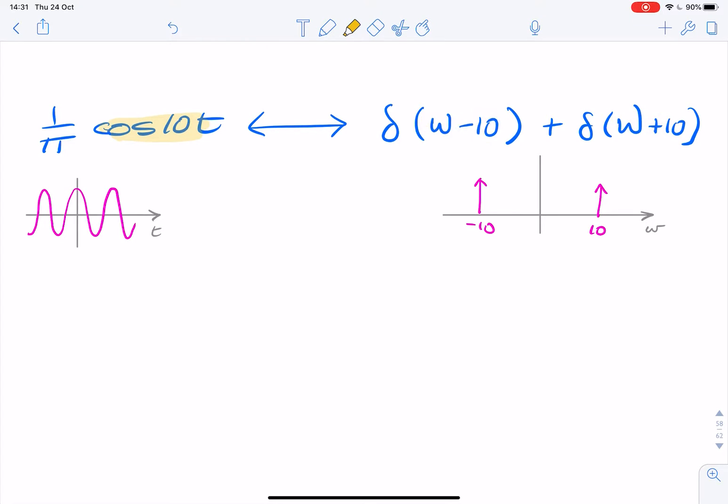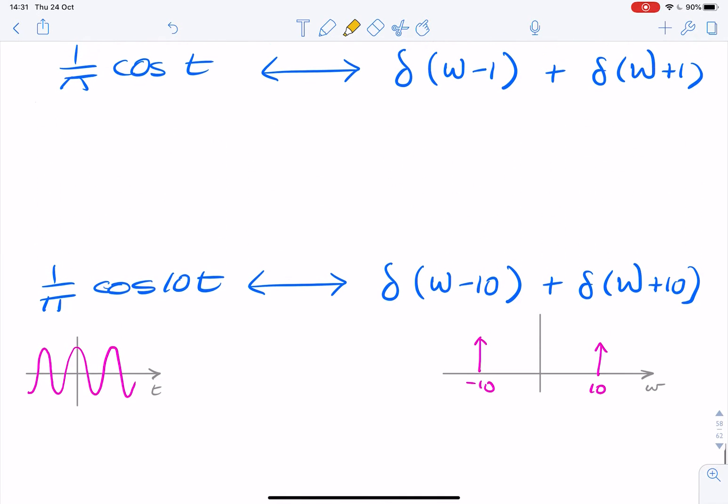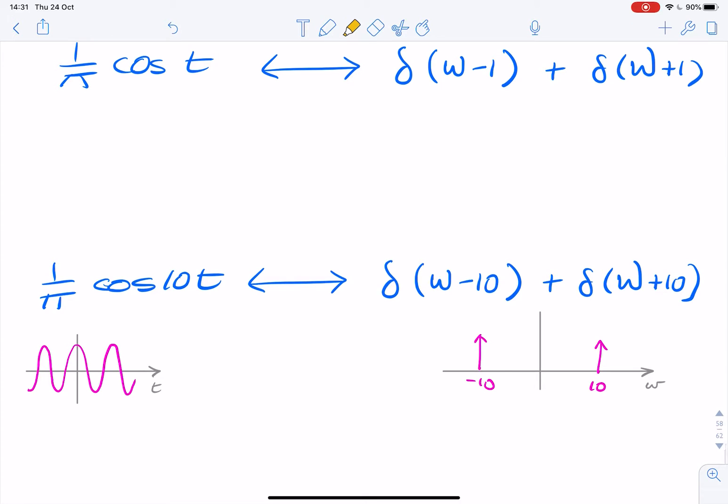The reason behind the question is that if one were to use a cosine t as our original x of t and the two impulses as our x of omega and consider these to be a Fourier pair, then going from cosine t to cosine 10t is like trying to find x of 10t.